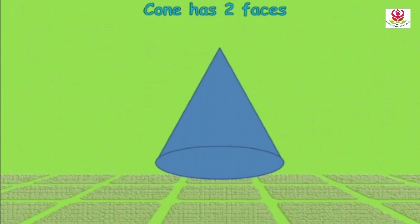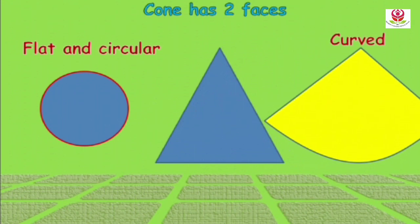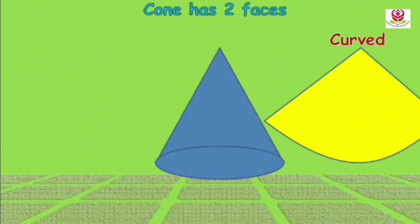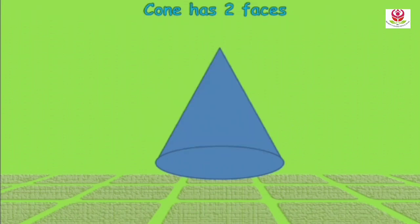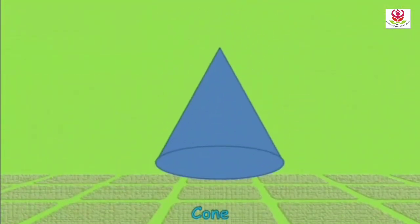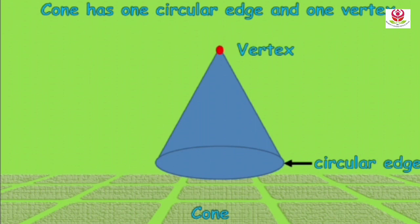Next is cone. Cone has two faces: one is flat and circular, and the other is curved. Cone has one circular edge and one vertex or one corner.